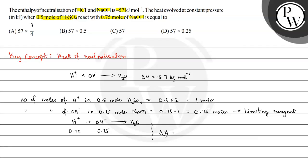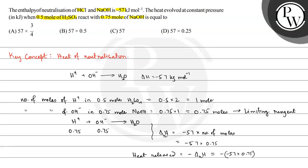The enthalpy of neutralization equals the standard enthalpy of neutralization multiplied by the number of moles: minus 57 × 0.75. The heat released equals minus of delta H of reaction — since this is exothermic, delta H is negative — so heat released = −(−57 × 0.75) = 57 × 3/4 kilojoules.